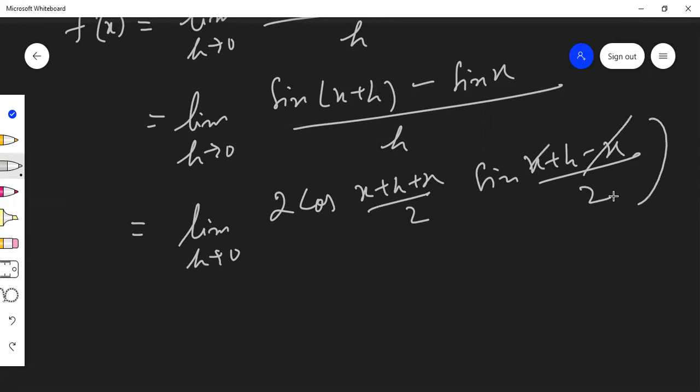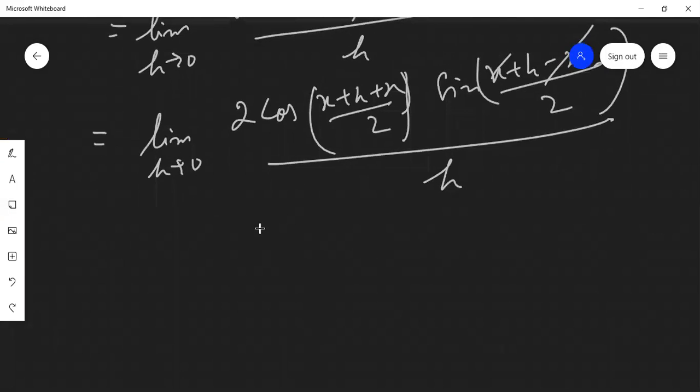Here we have x, x. And here we have an angle. It's divided by h. Now this is the thing.